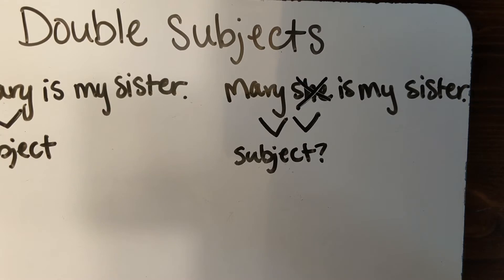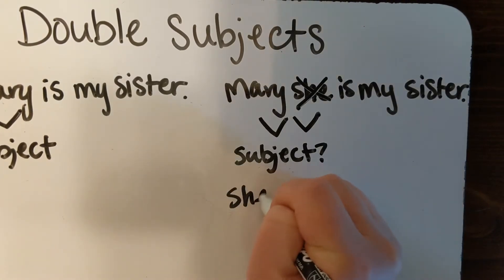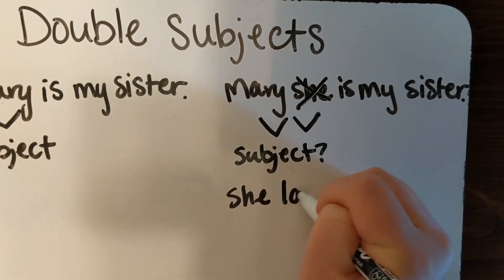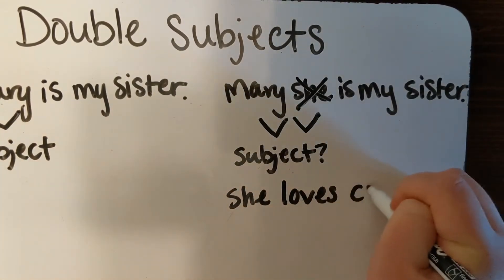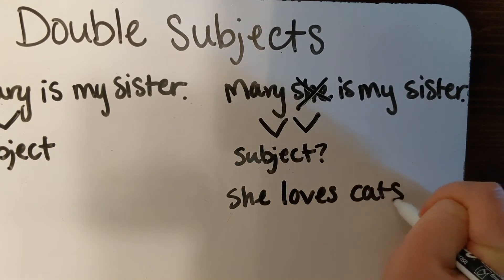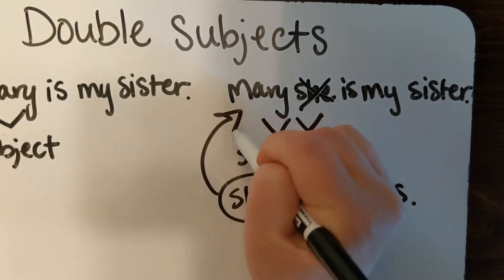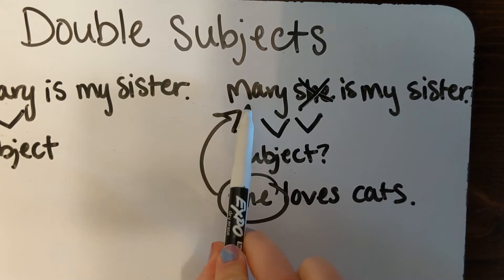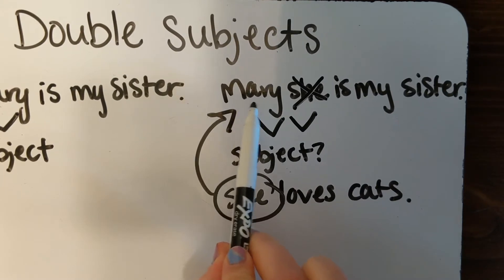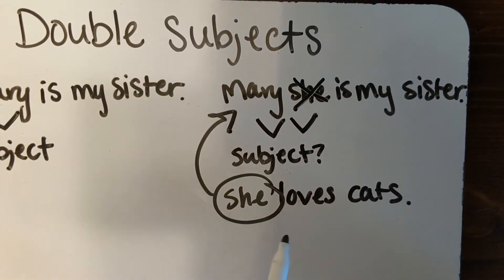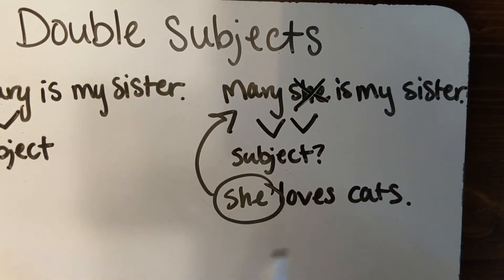If you were then going to talk about your sister Mary again in the same consecutive sentences, you could just say 'She loves cats.' We know that she is Mary because when we started talking, we said 'Mary is my sister. She loves cats.'